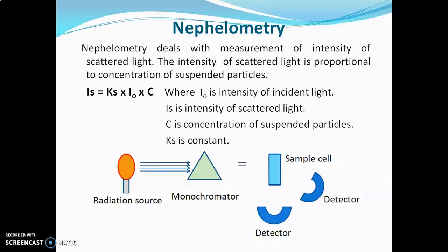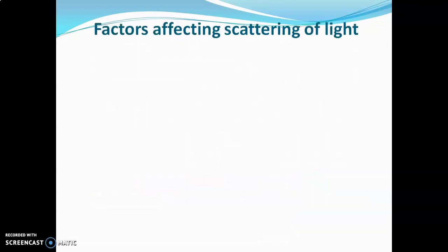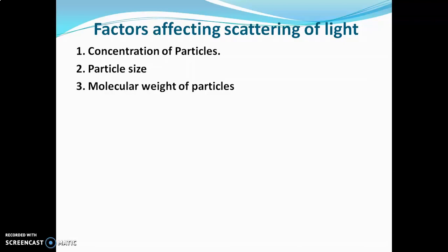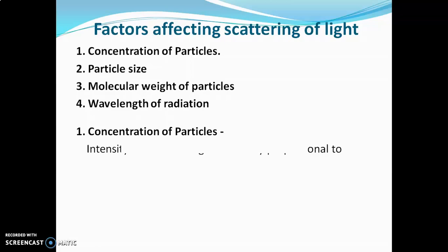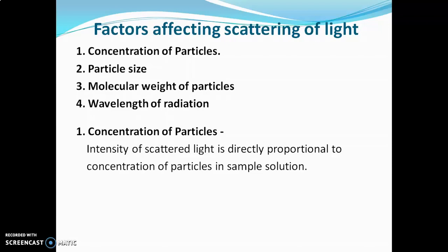The radiation source emits radiation, which passes through the monochromator and then through the sample cell. The suspended particles scatter the radiations, and these scattered radiations are measured by the detector. Regarding factors affecting scattering of light — the first factor is concentration of particles. The intensity of scattered light is directly proportional to the concentration of particles in the sample solution.